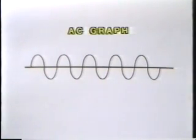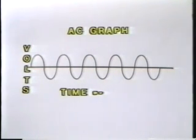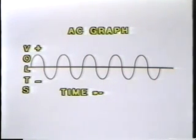Let's start off by taking a look at a simple graph of alternating current. This graph shows voltage in the vertical direction and time in the horizontal direction. Any positive voltage is shown as a line drawn above the 0-volt point. Remember, 0 volts is our ground, our electronic reference point. Negative voltages are shown as a line drawn below the ground line.